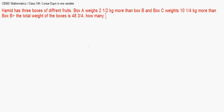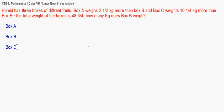The total weight of the boxes is 48 and three-quarters kg. We need to find how many kg box B weighs. We are given three boxes — let's write them down separately: box A, box B, and box C. Box A is expressed in terms of box B, and box C has also been expressed in terms of box B.